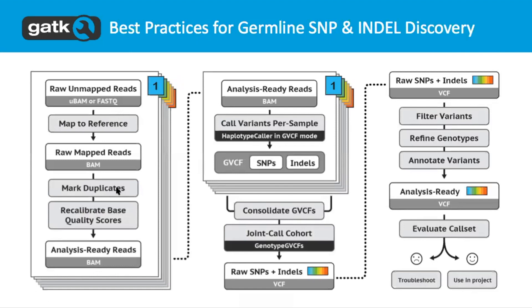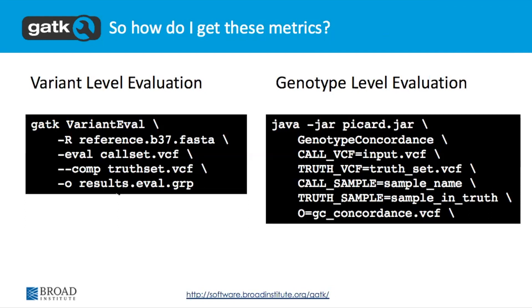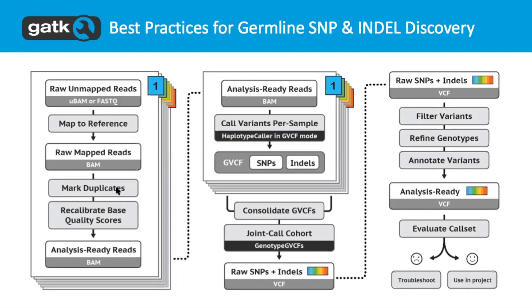So how do we actually get these metrics? We saw before using Picard. In GATK, this is the variant-level evaluation. If you have the genotype-level evaluation, you can use this Picard command line — I leave it to you to read it. The overall takeaway is that evaluating call sets, there's no way to fully automate this process. This gives you a high-level general idea of quality, and the idea is that you should take this back to a room full of people, discuss it, maybe refine your method and approach, and determine whether or not your data is good enough to use in your project.